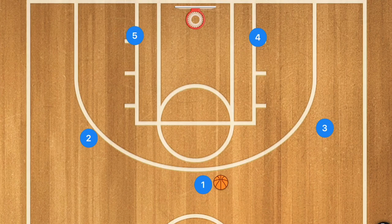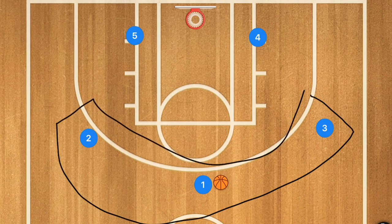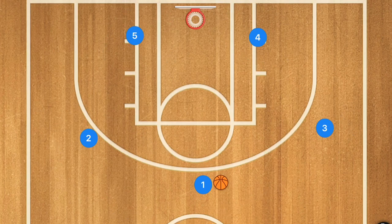Those sets are great against man-to-man defenses, except the 5-out which works against everything. This next set is specifically great for zone defenses. If you're going up against a 2-3 or 3-2 zone, this is the offensive set you'll want to run. The 3-out 2-in has 3 players on the outside and 2 players inside the 3-point line. A simple motion: player 1 passes to player 3, player 5 moves up toward the high post, player 1 screens away for player 2, and player 2 fills the spot.